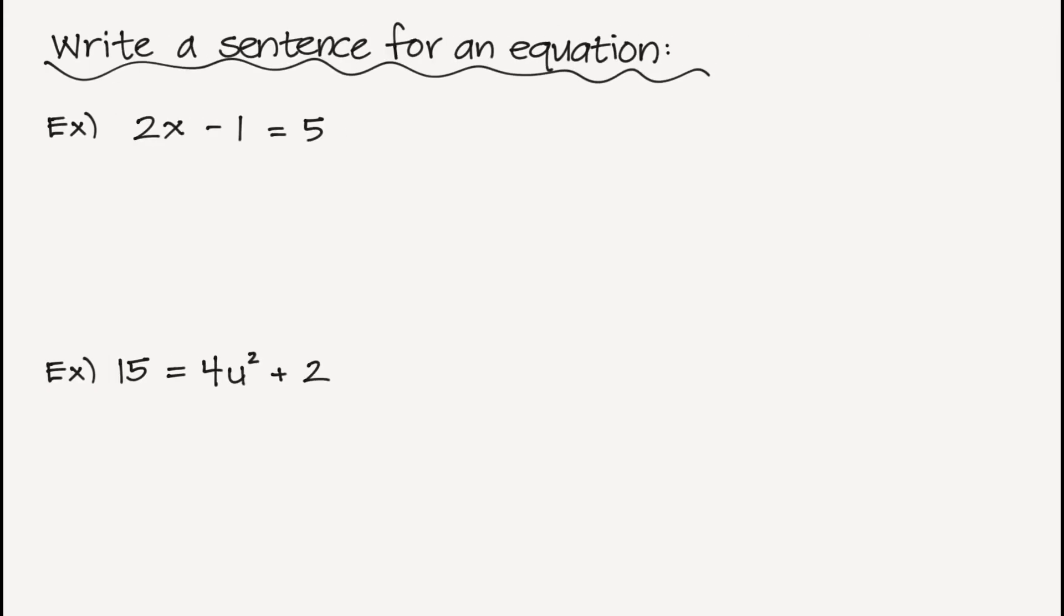Now we're going to write a sentence for an equation. So I'm given the equation. Let's translate it back into a sentence in English. And there's different ways you could do this. I can say 2 times X minus 1 is 5. I could just write it as simple as that. But obviously, there's other ways. You might have come up with a different way. For instance, you could have put the product of 2 and X. And maybe you said less 1. So that would be taking away 1. And then maybe you would say is equal to 5. And again, you could have come up with even more ways.